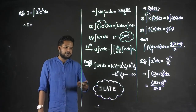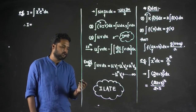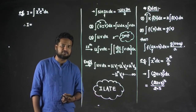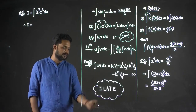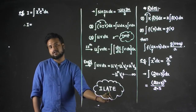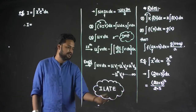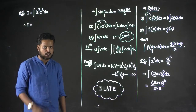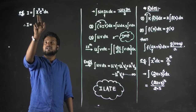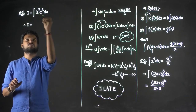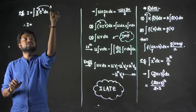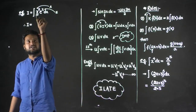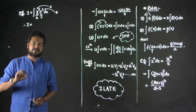The rule is ILATE: I = Inverse trigonometric (sin⁻¹, cos⁻¹, tan⁻¹, etc.), L = Logarithmic (log x), A = Algebraic (x, x², x³, etc.), T = Trigonometric (sin, cos, tan, etc.), E = Exponential (eˣ, 2ˣ, aˣ, etc.). For our question x²·eˣ: x² is algebraic (A) and eˣ is exponential (E). Since A comes before E in ILATE, x² is u and eˣ is v.